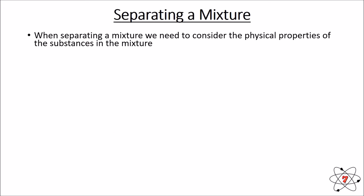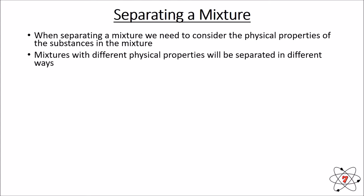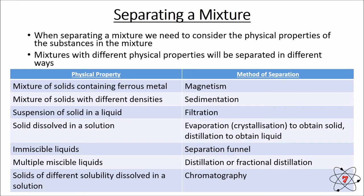When we separate a mixture we need to consider the physical properties of the substances in that mixture, as mixtures with different physical properties will be separated in different ways. Here's a quick table of methods: if we have a mixture of solids and one contains a ferrous metal — something that's magnetic, like iron — we would use magnetism to separate them. If we have solids with different densities, we use sedimentation.